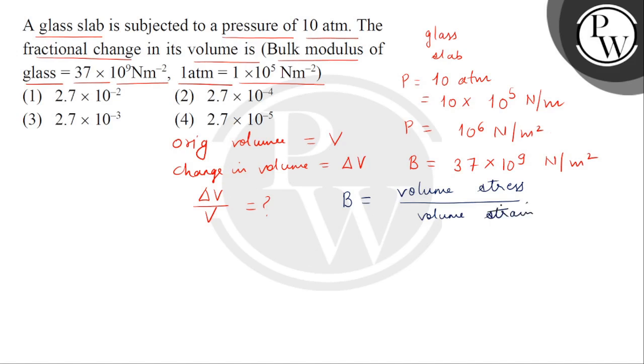So here we'll put the values. Volume stress means pressure, volume strain means del V divided by V. So we get del V divided by V equals to P divided by B, means pressure divided by bulk modulus.